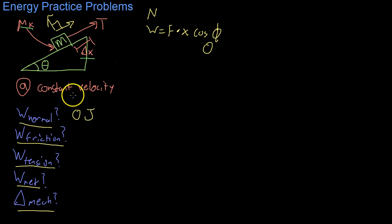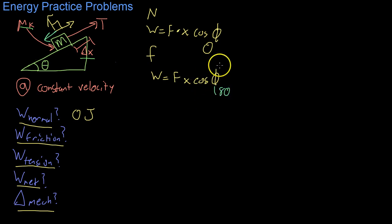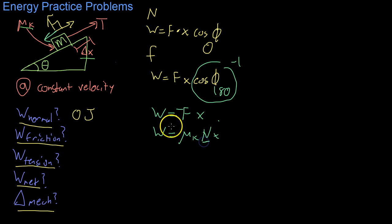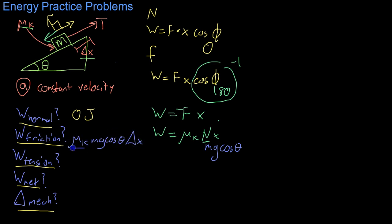What about the frictional force? Work equals force times delta x times cosine of phi. The frictional force operates anti-parallel to the direction of motion, so the angle between them is 180 degrees, and cosine of 180 is negative one. So the work done is the opposite of the friction force times the distance. The frictional force is mu k times the normal force times delta x. On a ramp, the normal force equals mg cosine theta, so the work done by friction is negative mu k times mg cosine theta times delta x.